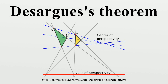In an affine space such as the Euclidean plane, a similar statement is true, but only if one lists various exceptions involving parallel lines. Desargues's theorem is therefore one of the most basic, simple, and intuitive geometric theorems, whose natural home is in projective rather than affine space.